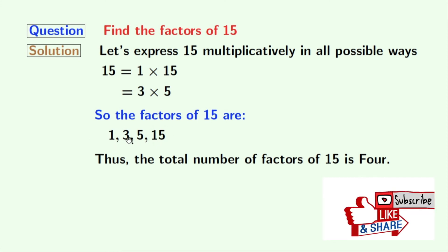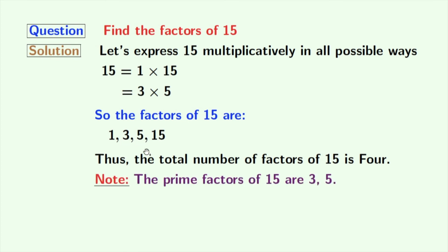Here we can see that 3 and 5 are prime numbers because these numbers do not have any divisor other than 1 and that number itself. So the prime factors of 15 are 3 and 5.